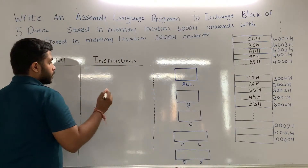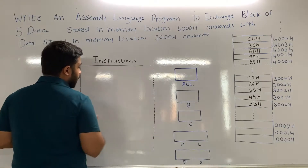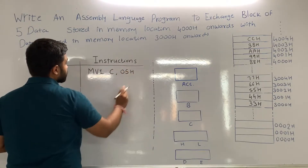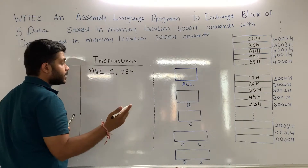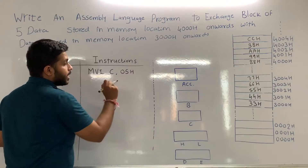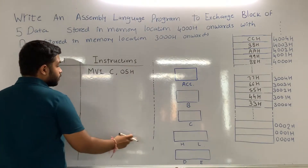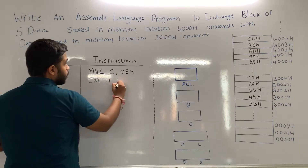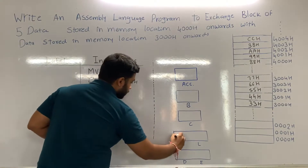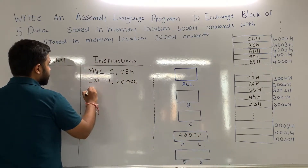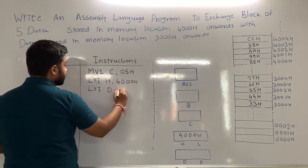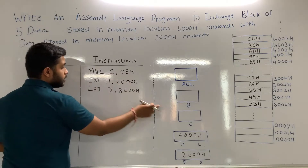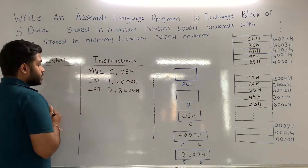Now let's see the program. First of all, let's initialize the counter using the instruction MVI C, 05H. If the block of data is 10 then you would write MVI C, 0AH — since 0A in hexadecimal equals 10. After that, we initialize the source pointer with LXI H, 4000H, so the HL pair will store 4000H, and LXI D, 3000H so the DE pair will contain 3000H. Initialization is now done.